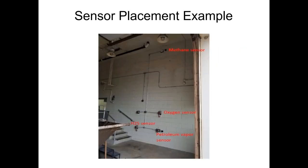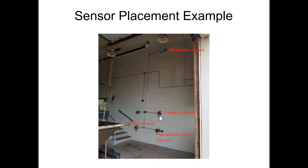In the example photo, only the methane sensor uses a remote mount — the transmitter is at the upper left of the four sensors shown. The oxygen sensor is mounted integrally at face level, and the H2S and petroleum vapor sensors are also integrally mounted at a convenient accessible height. Technologies exist that would allow remote mounting all sensors to two transmitters instead of one transmitter per sensor.